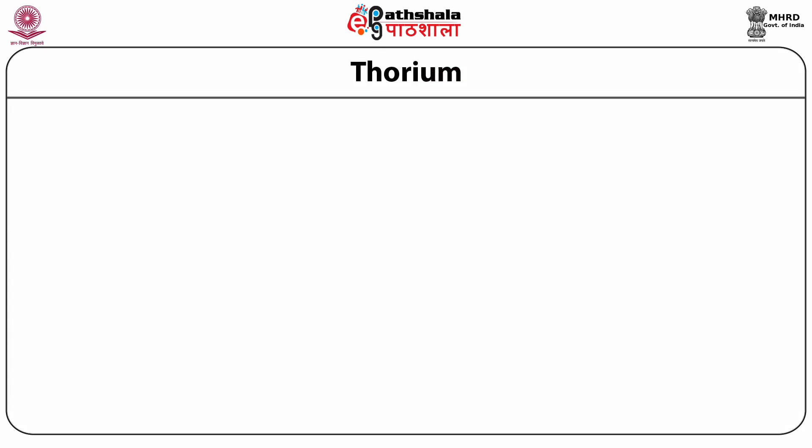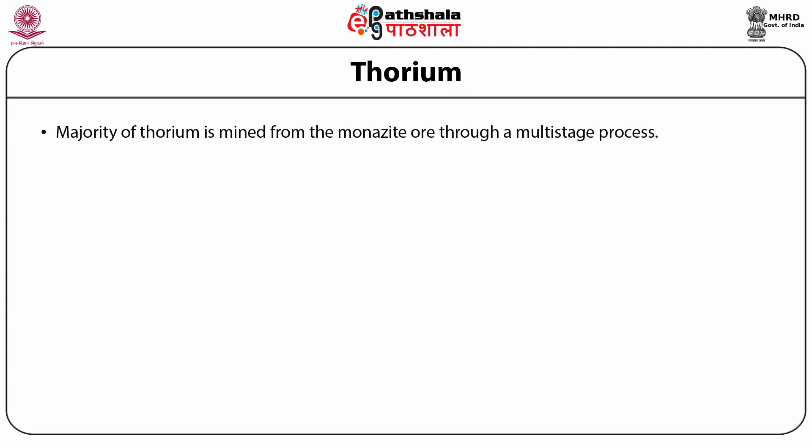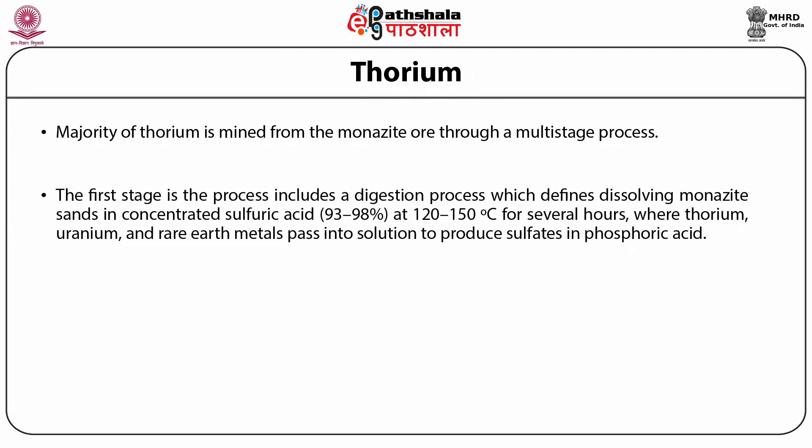Monazite sand, which is a rare earth phosphate mineral, is an important source of thorium, and almost two-thirds of its deposits are found on the southern and eastern coast of India. Let us study the extraction and fabrication of thorium. The majority of thorium is mined from monazite ore through a multi-stage process. The first stage involves a digestion process, which consists of dissolving the monazite sands in concentrated sulfuric acid at around 120 to 150°C for several hours.